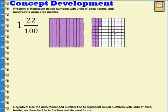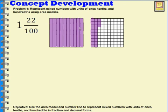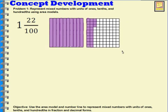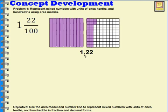I'll begin with this one to represent the one — I have the whole area model shaded in purple. Now I have 22 hundredths of another piece. Since it's hundredths, I'm going to use one of these grids that have a hundred pieces, but they're still the same size. I have 22 of them shaded in: 10, 20, and 2 more. There — one whole and 22 hundredths. And if I write this as a decimal, it's 1.22 — one and 22 hundredths. Notice when I got to the decimal point, I said 'and.'